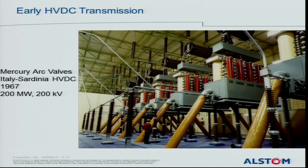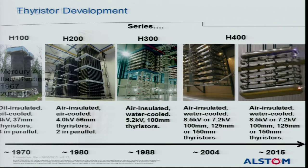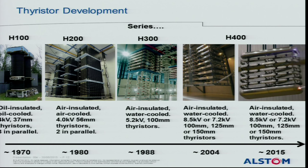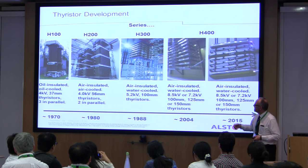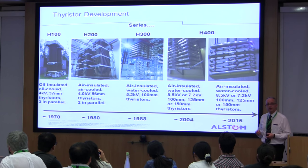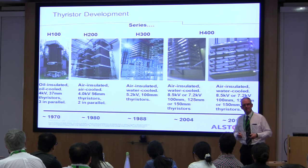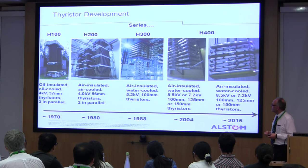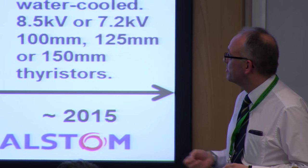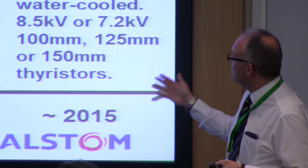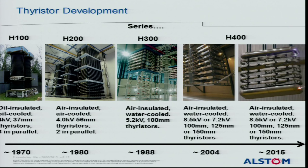Going back to history — early schemes in 1967 used mercury arc valves, which were being replaced by thyristors by the 70s. The technology has been driven fundamentally by the semiconductors. Early 70s we used 4 kV 37mm devices with three in parallel, outdoor porcelain cylinders, oil cooled. We went to air cooled in the 80s using 56mm devices, two in parallel — predominantly because the regulator at the time said you can't mix water and power electronics. Then in the 80s we did use water cooling: 5.2 kV, 76mm thyristors. Since the early 2000s, a more standard valve approach allows use of 8.5 kV or 7.2 kV devices at different diameters, optimised for the scheme.